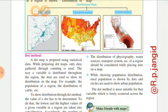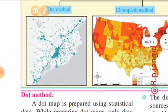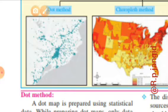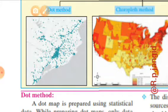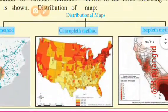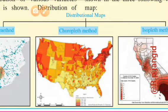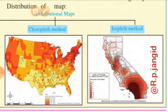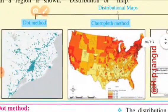First — dot method. Dot method ka matlab: jis map ke andar dots were used and different dots were in different sizes, so each dot's size corresponds to a different value. Agar smaller dot rahega toh small value, agar bigger dot rahega toh value bhi zyada rahegi. Second — chloropleth: yahan pe shade kiya jaata hai. Jahan light shade hoga wahan population ya productivity kam rahegi, aur darker color mein population number zyada rahega. Third — isopleth method: yahan pe lines method se dikhaya jaata hai. Chloropleth mein box/square type hota hai, jabki isopleth mein curve system aur line draw method use kiya jaata hai.